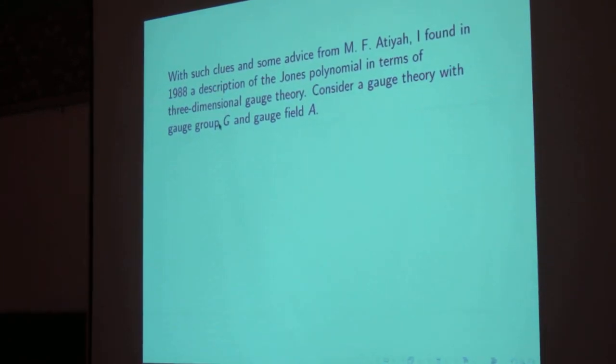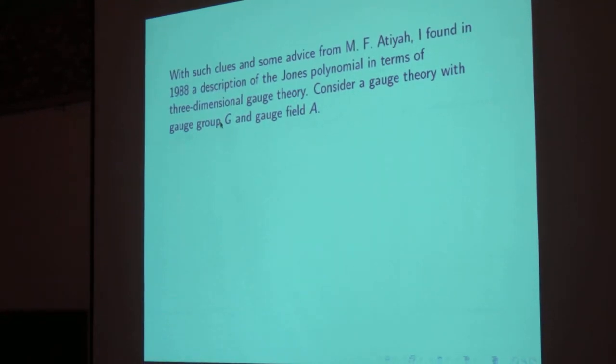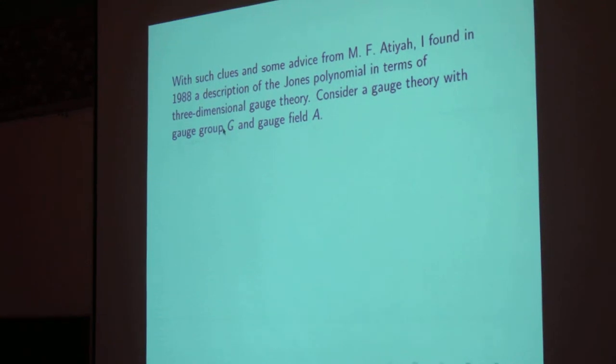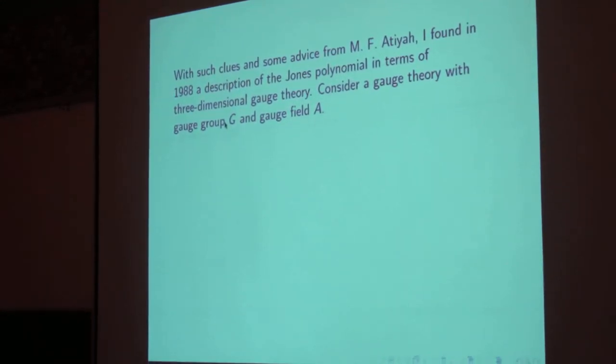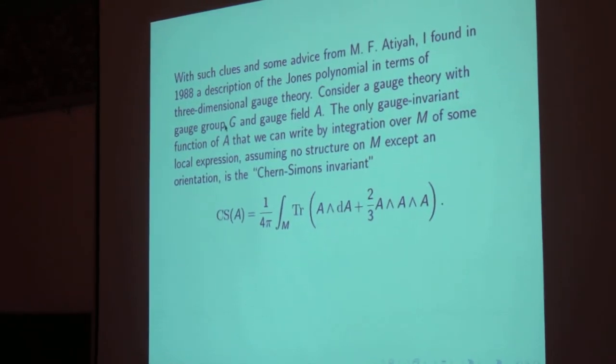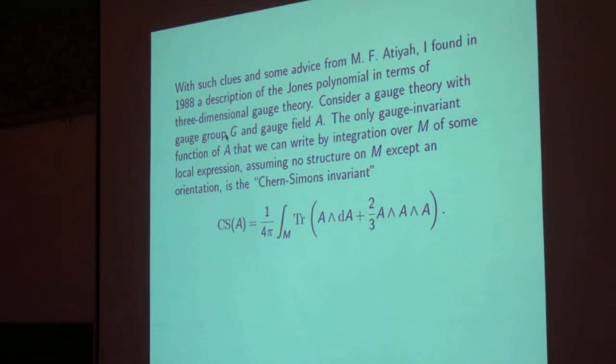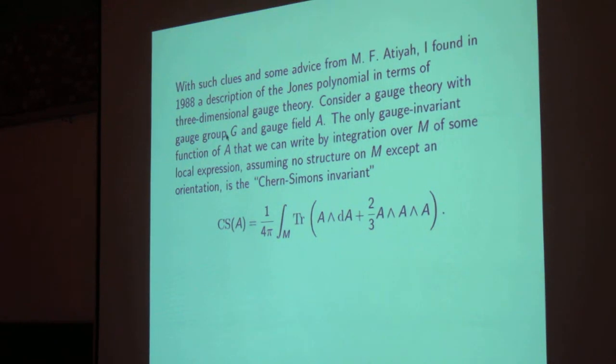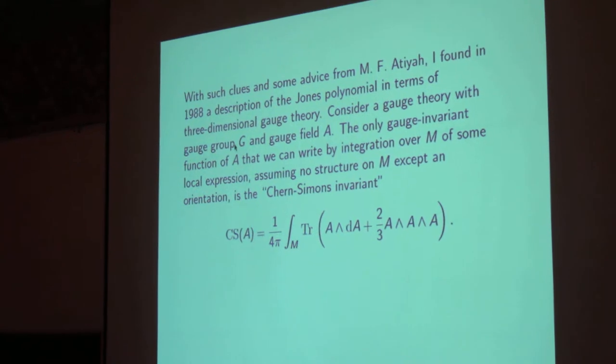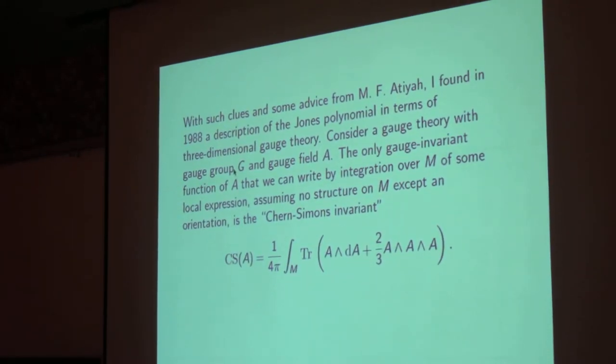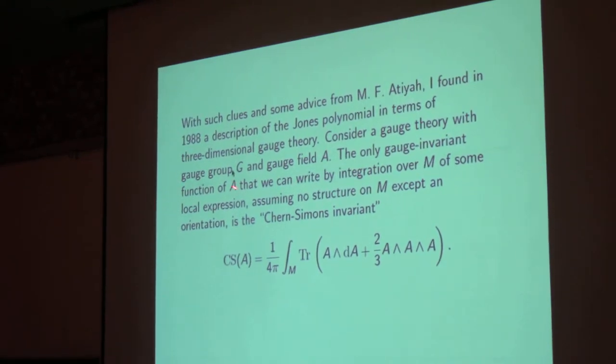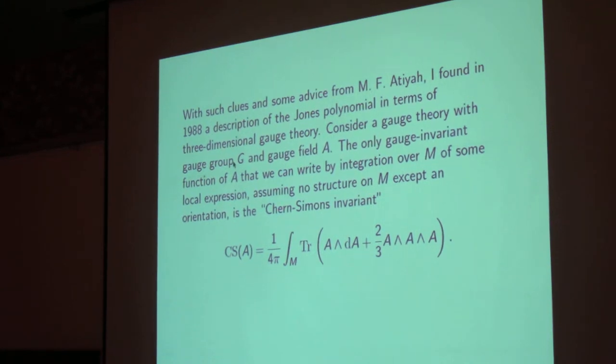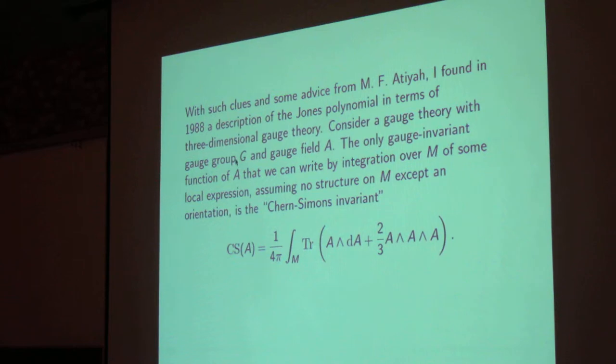So this is going to be a lot like standard three-dimensional quantum gauge theory, as used in particle physics and nowadays also in condensed matter physics, except that the action is going to be different, and of course we'll be in three space-time dimensions instead of four. We consider a gauge group G with a gauge field A, and we're trying to make topological invariants, which means that unlike quantum electrodynamics or quantum chromodynamics where the Lorentz metric of space-time is used in making the action, here we better not use a metric, because if we use a metric then we will not get topological invariants.